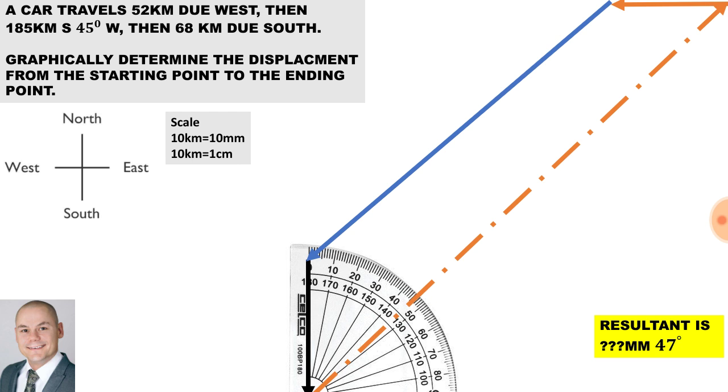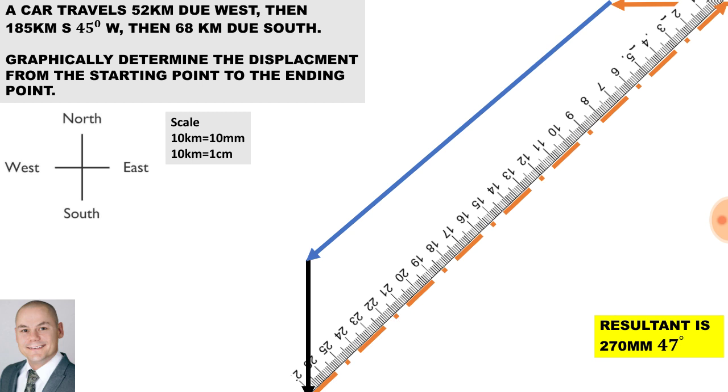Now the angle of this resultant is 47 degrees using our protractor, and using our ruler to determine the size of the vector, that is 270 millimeters at 47 degrees.